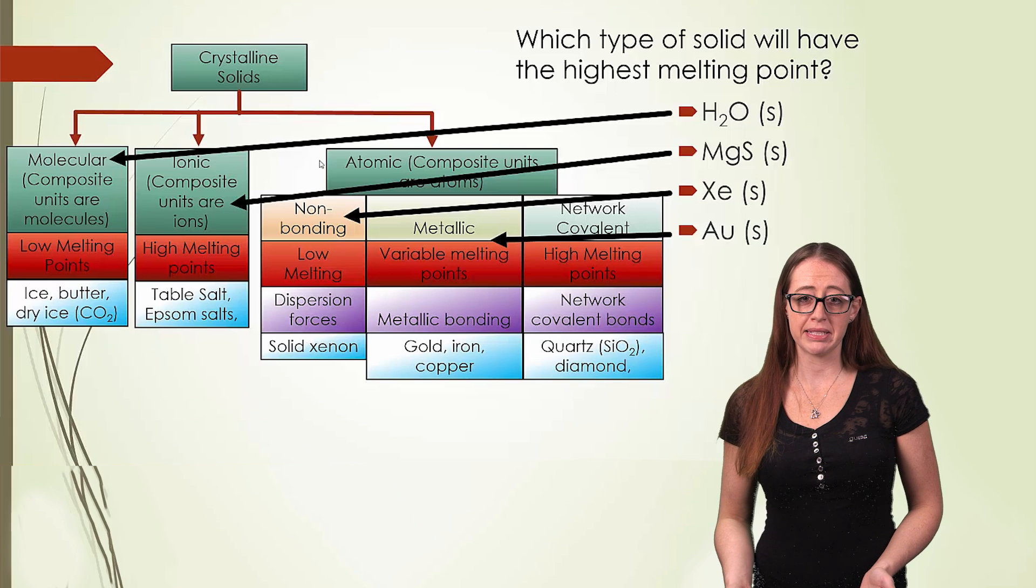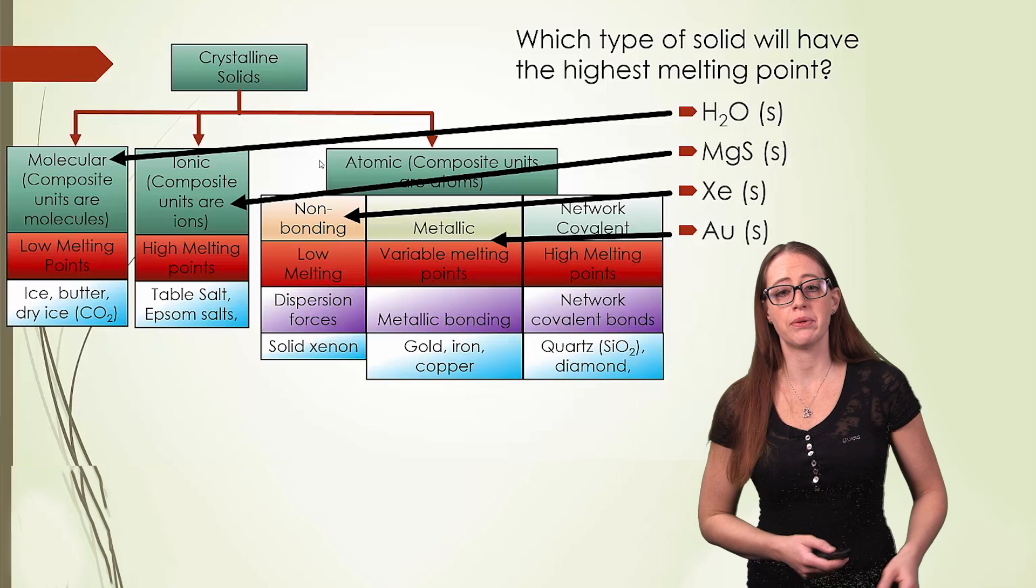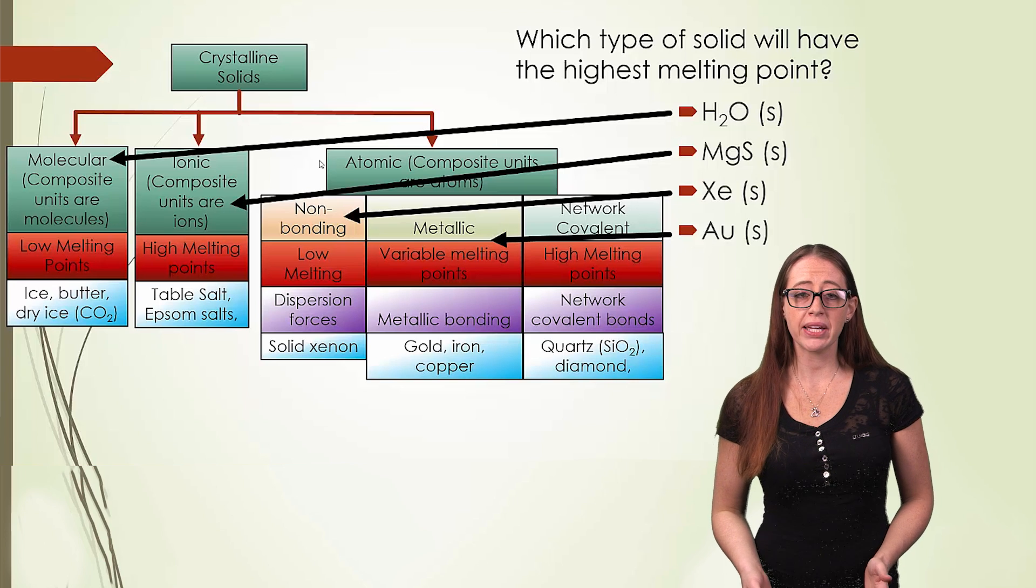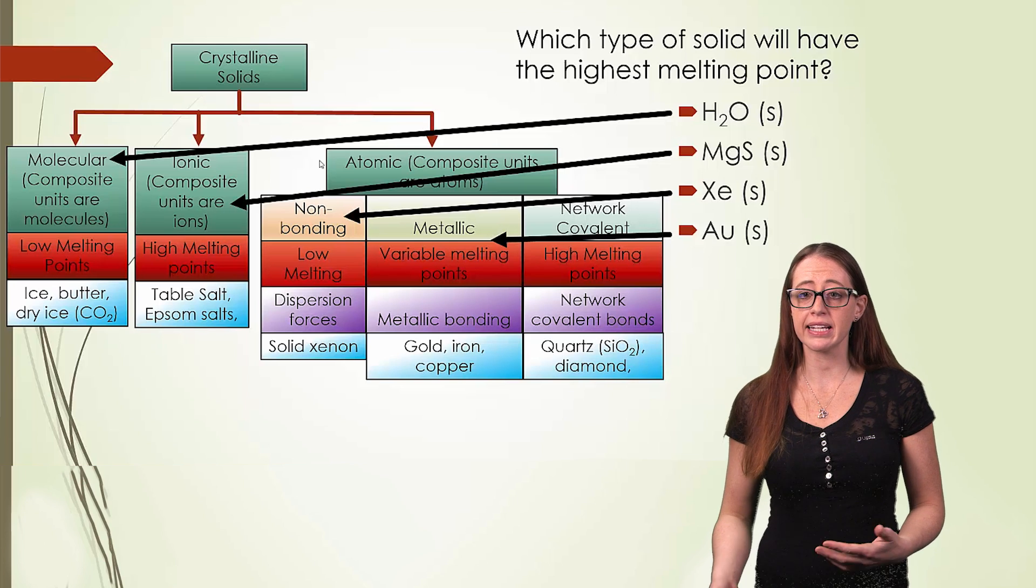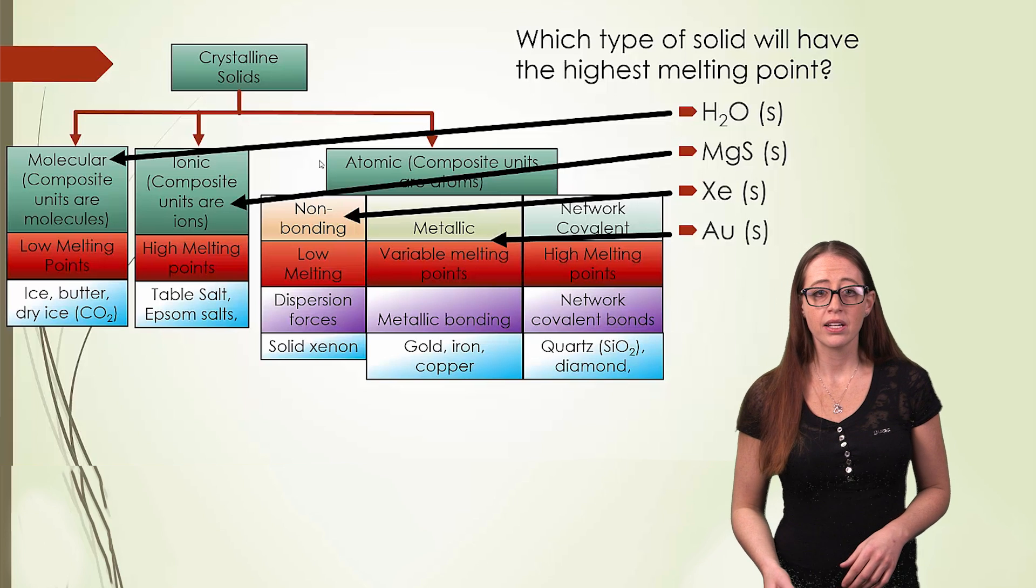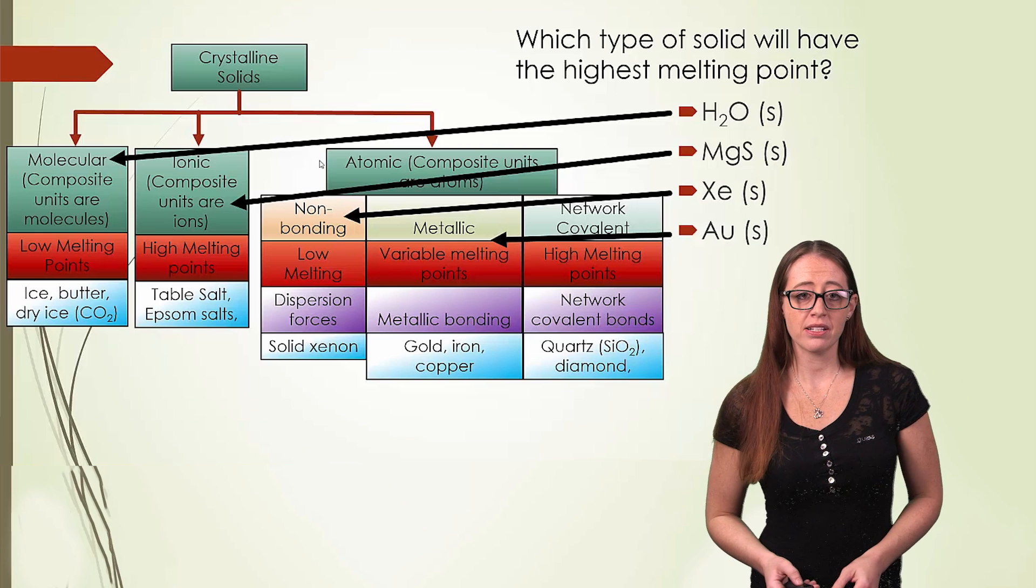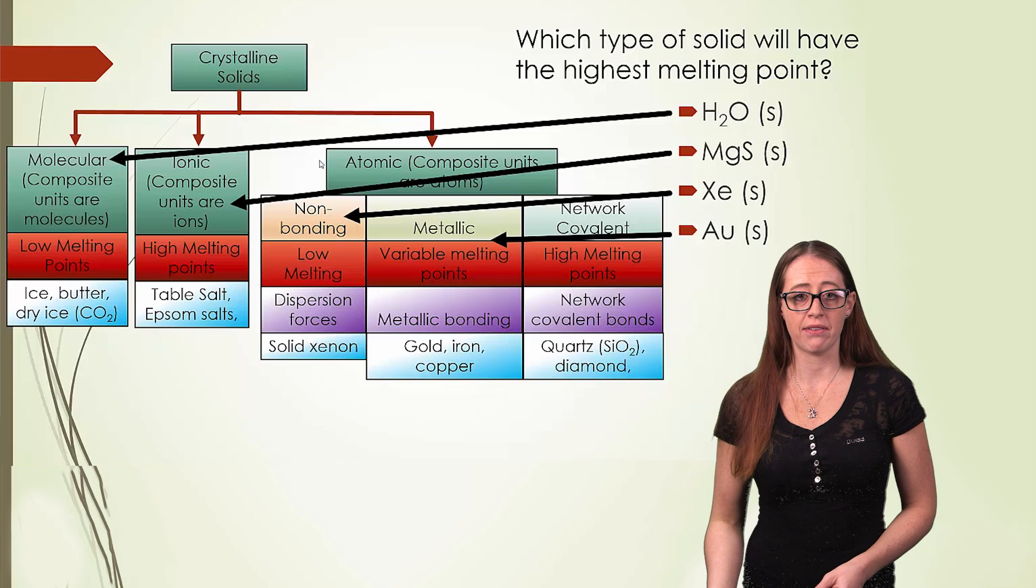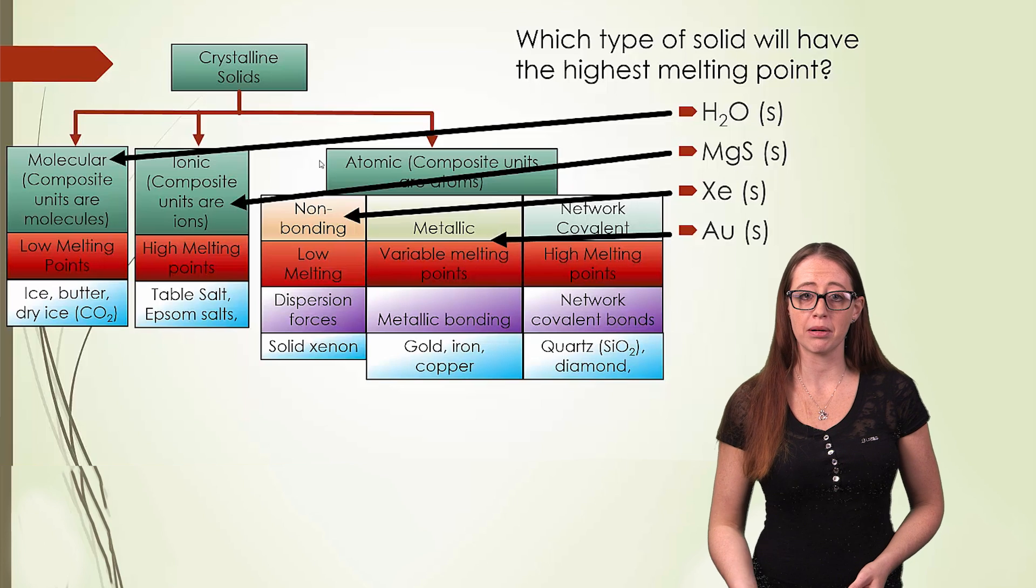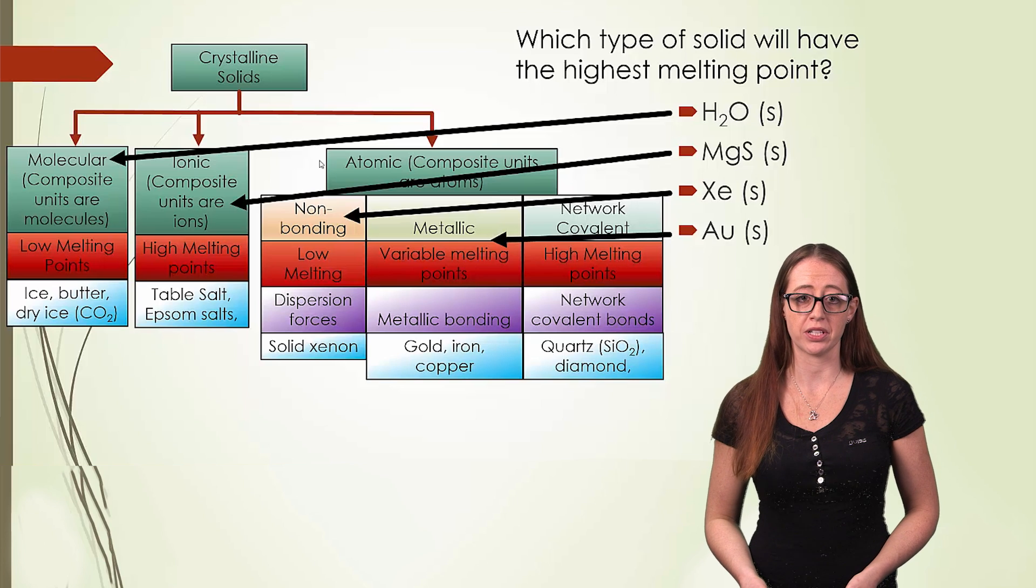That's held together with metallic bonding, which has a very wide range. So these are variable, but we can still make some generalities and take a guess about which one is most likely to have our highest value. Generally, as mentioned, ionic and network covalent have our highest. And so in this case, we would think that magnesium sulfide is probably going to be our highest melting temperature.